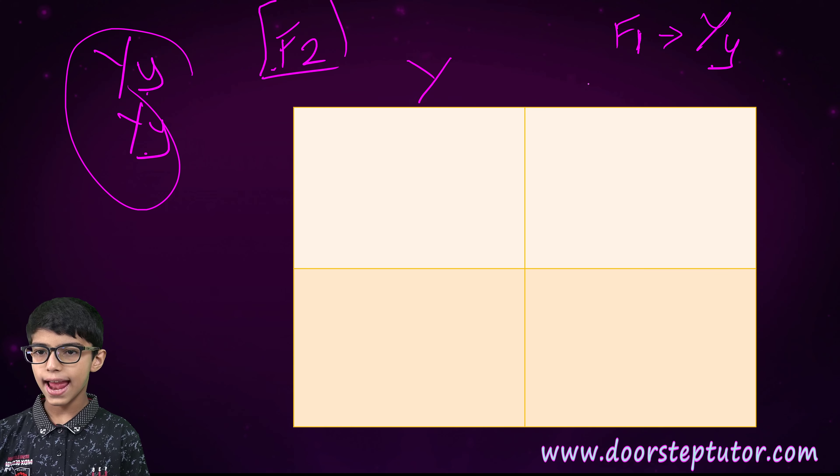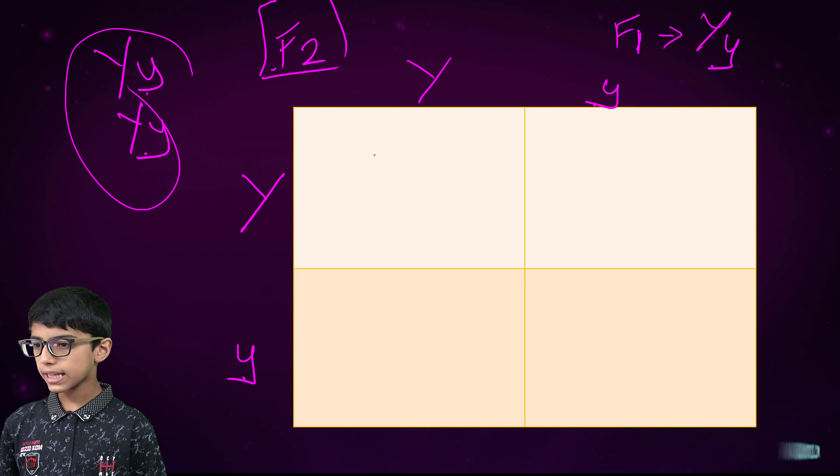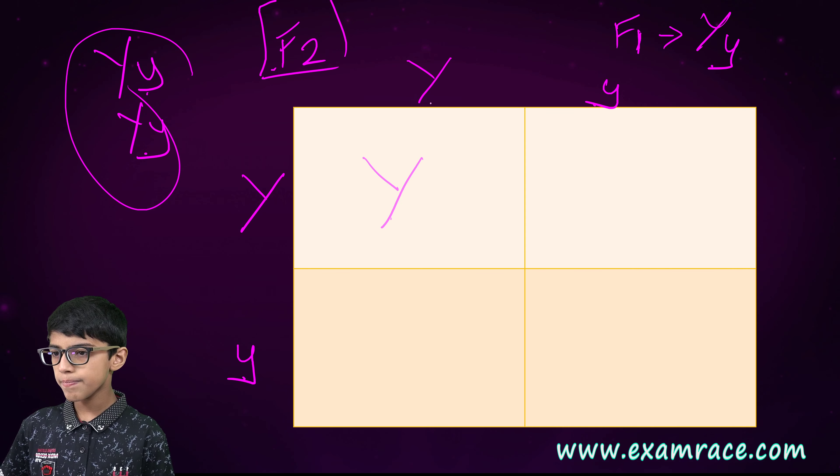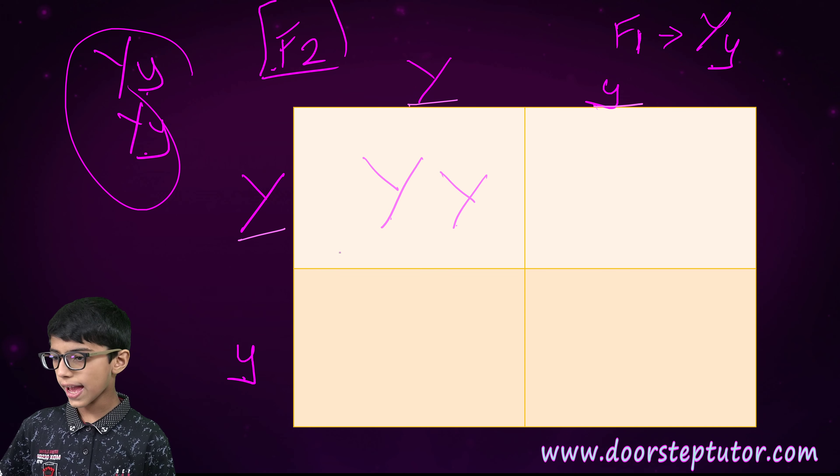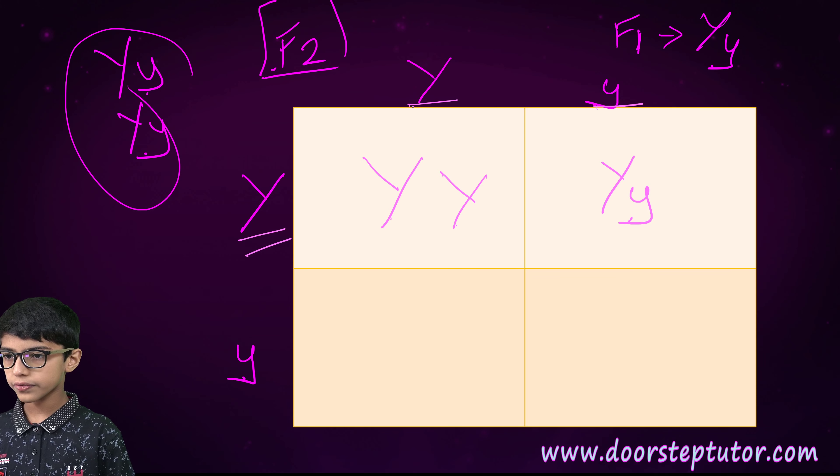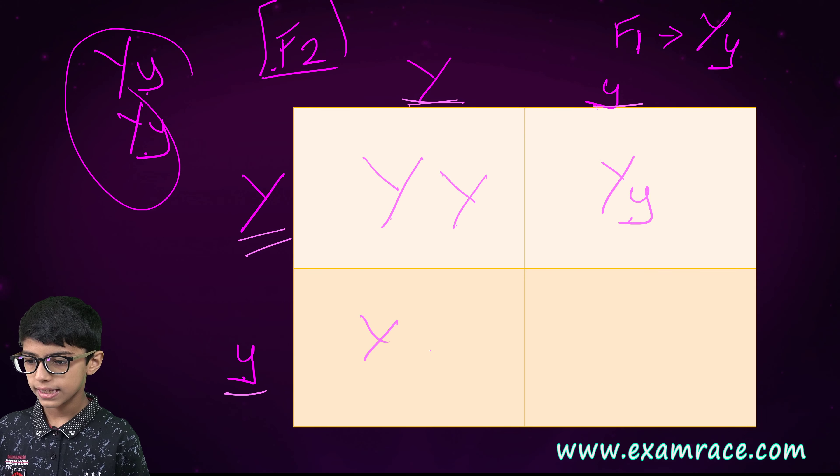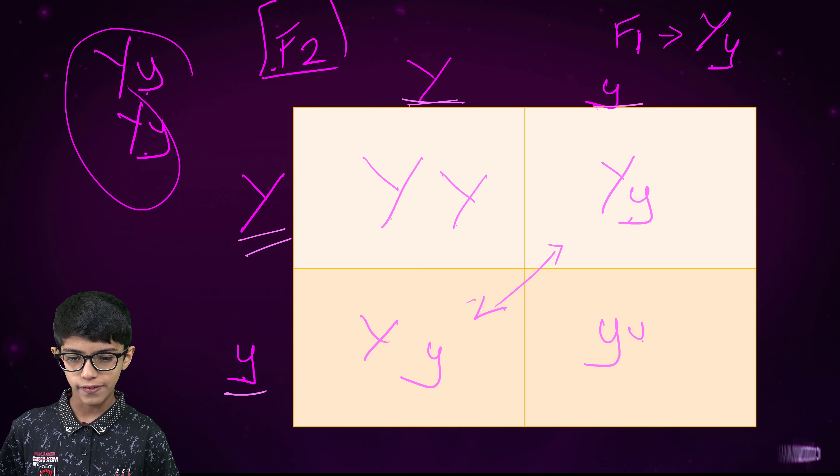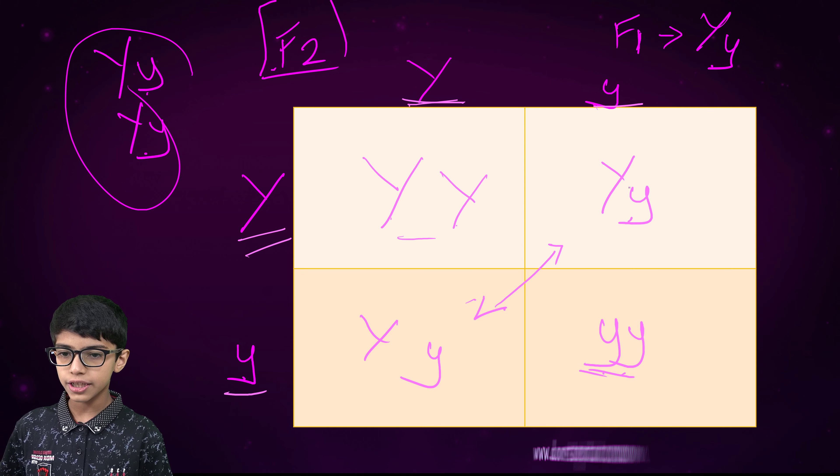Capital Y and then small y. Here also capital Y and small y. Here it would be a little different. What will we get? Yes, capital Y and again capital Y. Here small y and capital Y. Here what will we get? Small y and capital Y. These two are the same. And here we get both small ys. These are same. This is different and this is different.